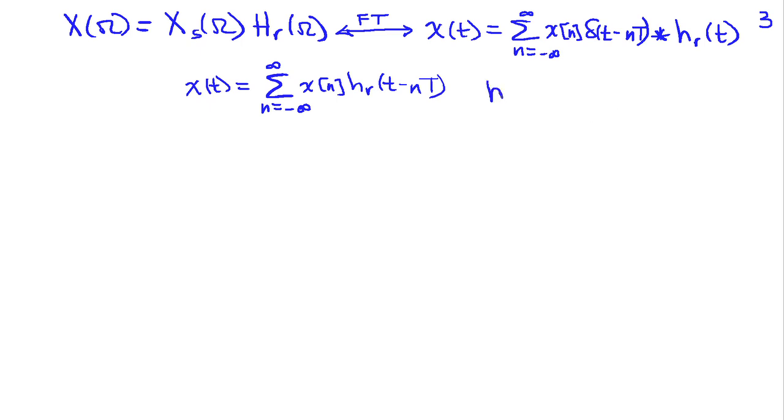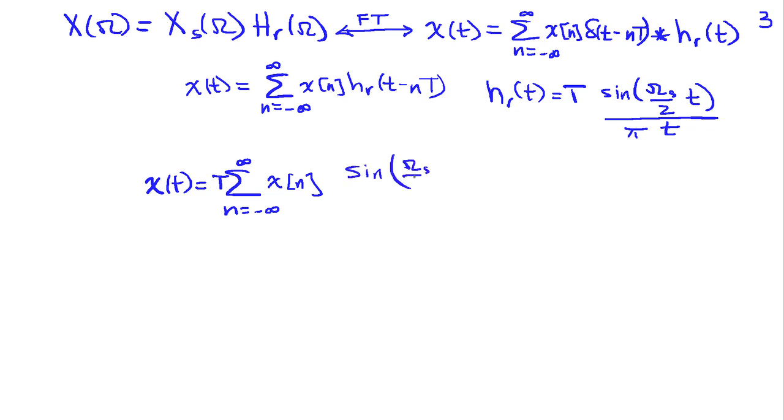And it's fairly simple to show that hr(t) is given by T times the sine of ωs/2 times t divided by π times t. And this, if we substitute this into our expression for x(t), we get that x(t) can be expressed in terms of the samples x[n], sum n equals minus infinity to infinity x[n]. And then we'll have sine of ωs/2 times (t - nT) divided by π times (t - nT). So, hr(t) in this case is just a sinc function and what this says is that we're adding up shifted sinc functions.